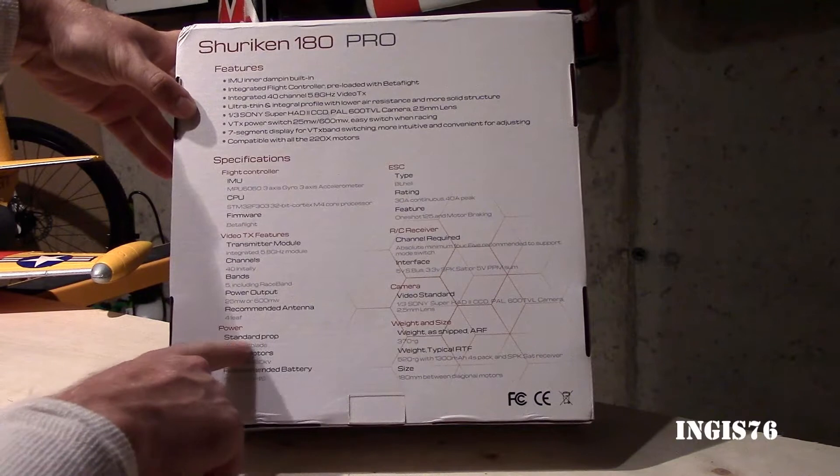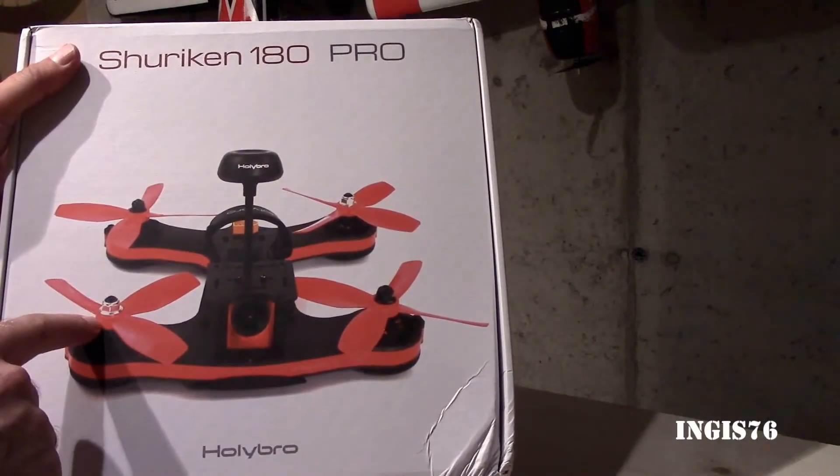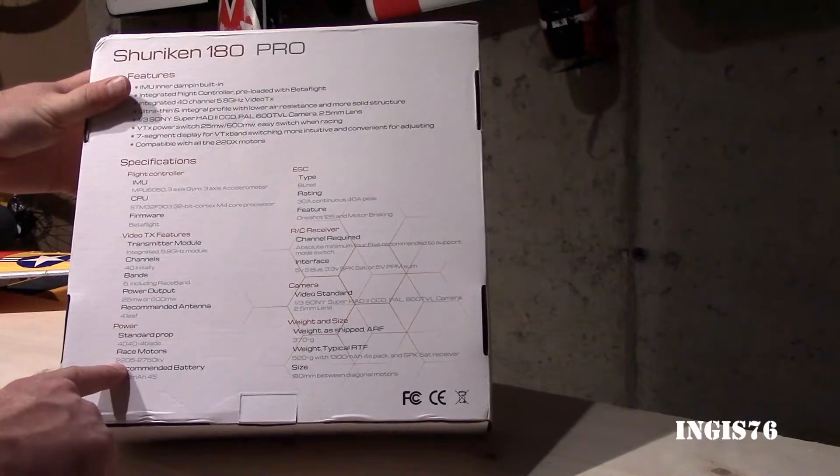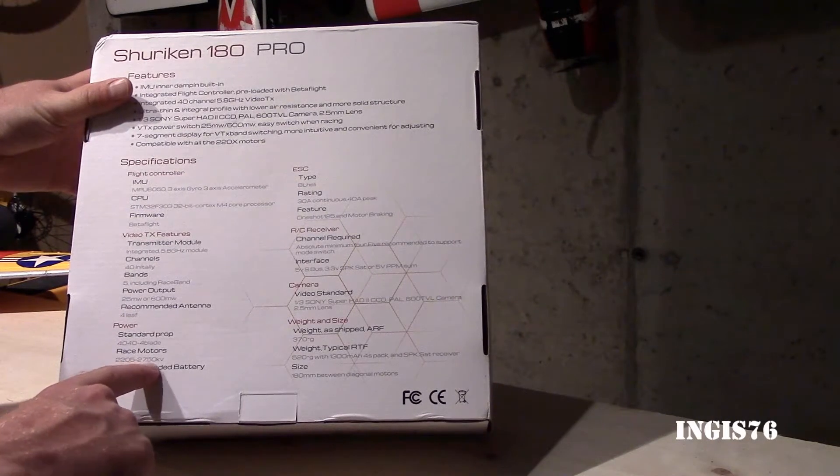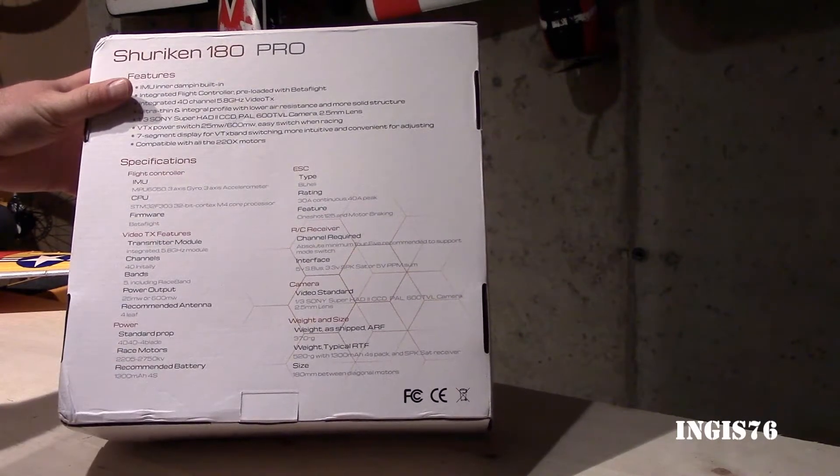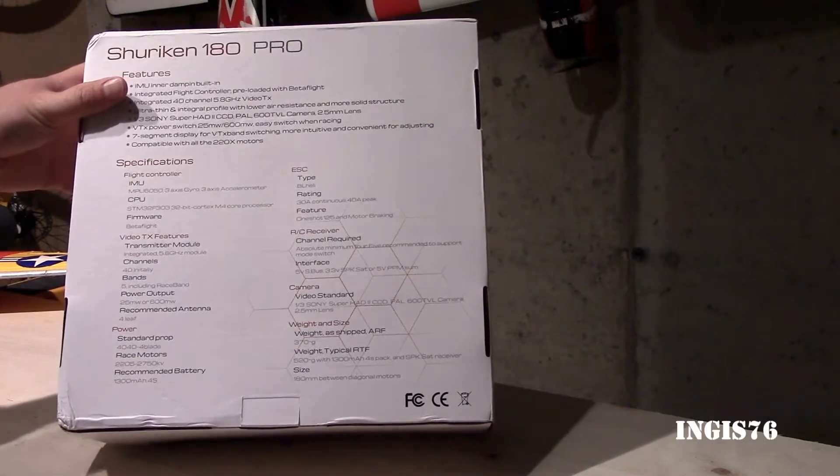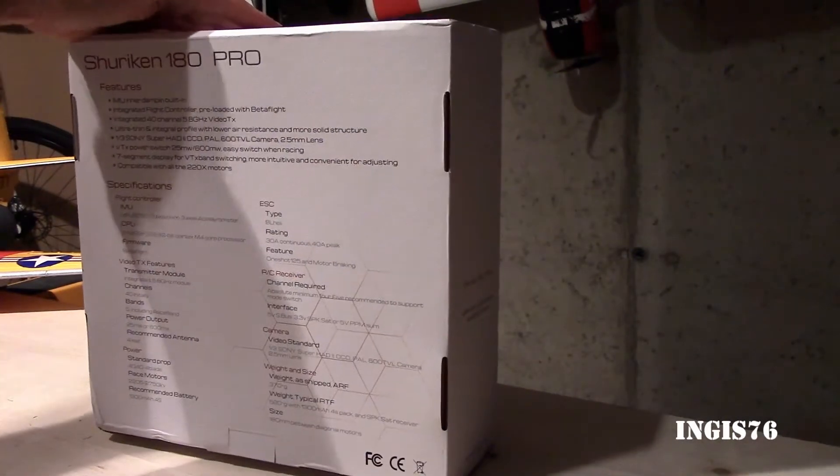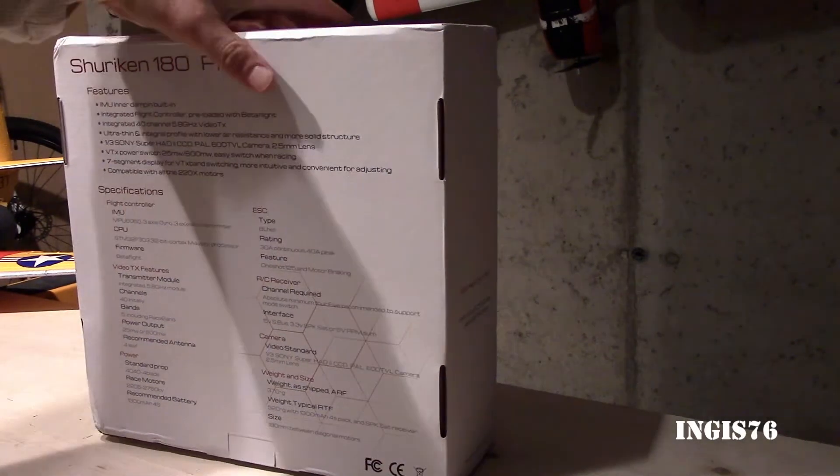The standard blades for this one is 40-40, 4 blades, you can see them here. And the motors are 2205, 2750kV. Also recommended 4S 1300 milliamp, and I have a few of the 1300 milliamp, but I also have some of the 1550 milliamp, so I'm gonna try both of them.